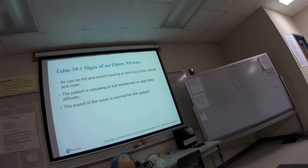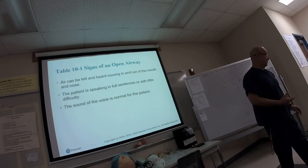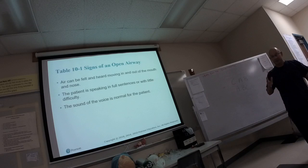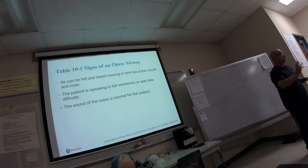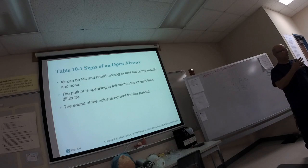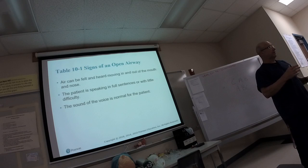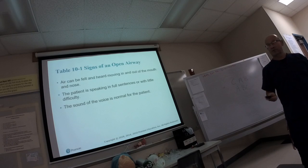You reach down and grab the radial pulse. You're sort of doing it all at once. The patient speaks to you, so they have an open airway. For an unconscious patient, go up and check a pulse. If they have a pulse, for a non-traumatic patient: head tilt chin lift — then make sure to see if they're breathing. If they're not breathing, you're going to breathe for them.